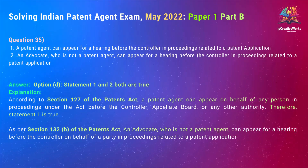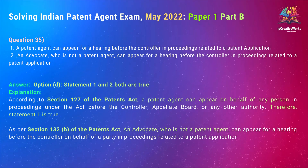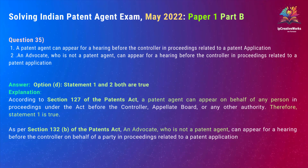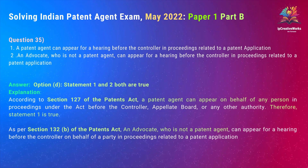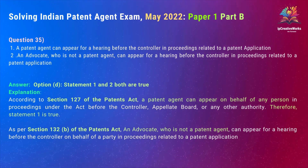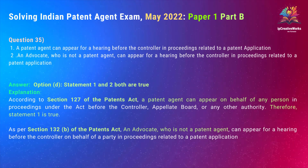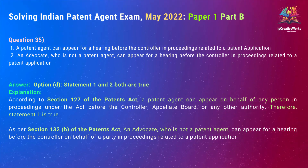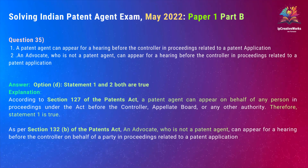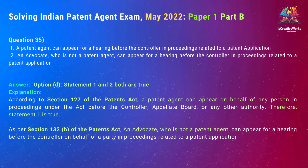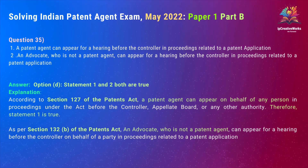Question 35. Statement 1: A patent agent can appear for a hearing before the controller in proceedings related to a patent application. Statement 2: An advocate who is not a patent agent can appear for a hearing before the controller in proceedings related to a patent application. The correct answer to Question 35 is Option D — Statement 1 and 2 both are true. According to Section 127 of the Patents Act, a patent agent can appear before the controller, appellate board, or any other authority. As per Section 132, an advocate who is not a patent agent can also appear before the controller on behalf of a party.